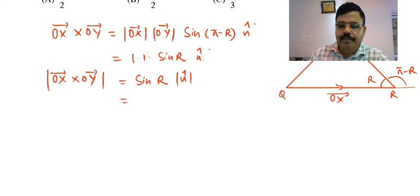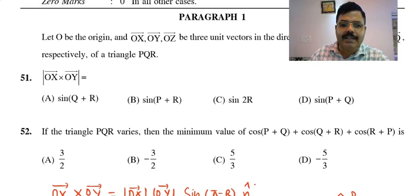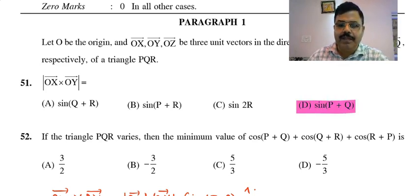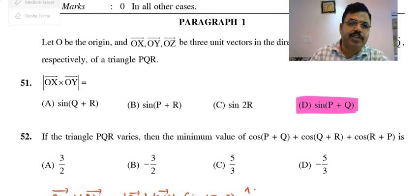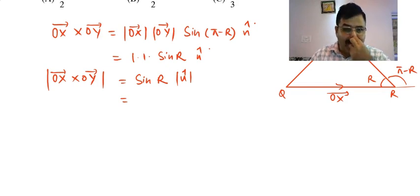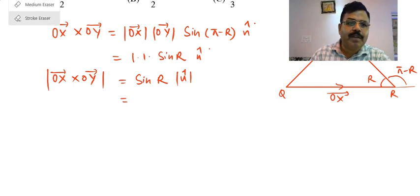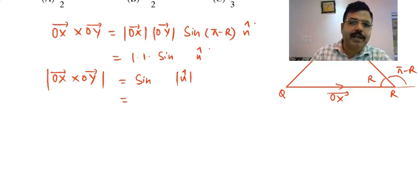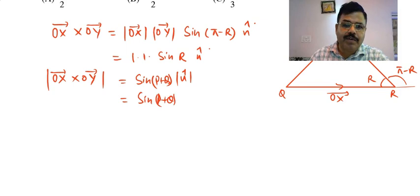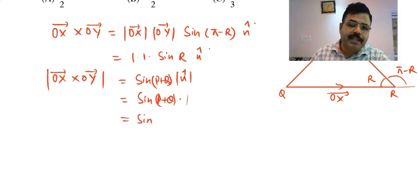From the given options, R is not directly listed, but we know that P + Q + R = pi, so R = pi minus (P + Q), meaning pi minus R = P + Q. Therefore, sin(R) = sin(P + Q). So the answer is sin(P + Q), which corresponds to option D.